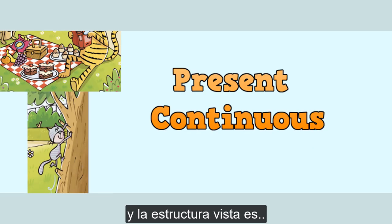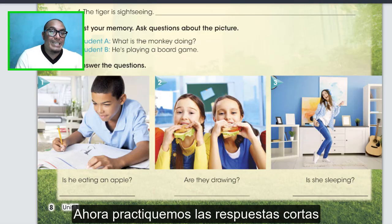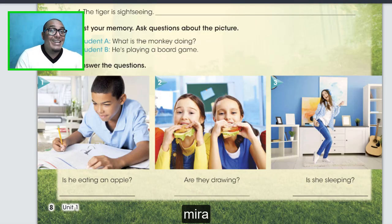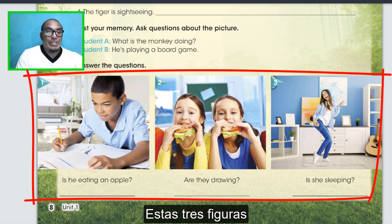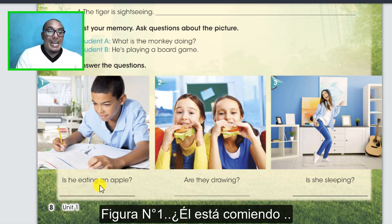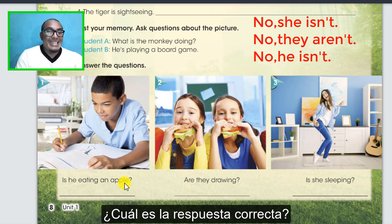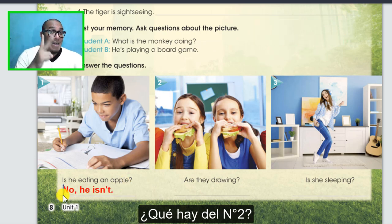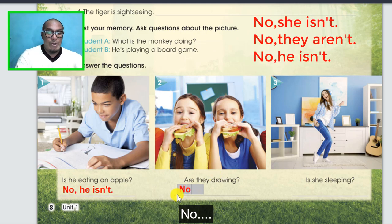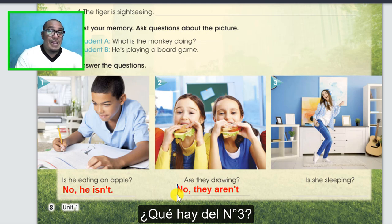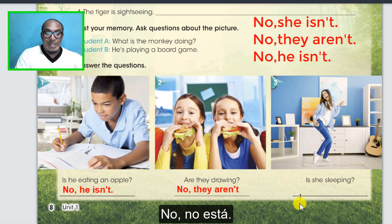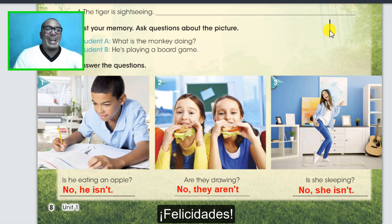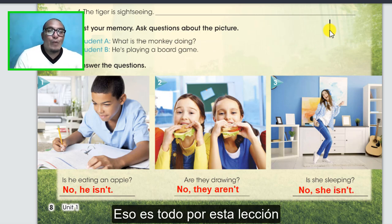That's why we get 'The cat is climbing' and 'The dog and the tiger are having a picnic.' This structure is present continuous. Now let's practice the short answer. Look at these three pictures. Picture number one: Is he eating an apple? What is the correct answer? No, he isn't. Number two: Are they drawing? No, they aren't. Number three: Is she sleeping? No, she isn't. Congratulations, that's all for the lesson.